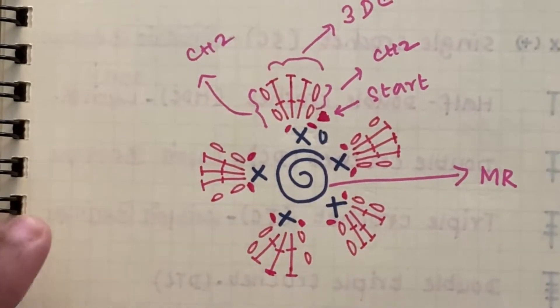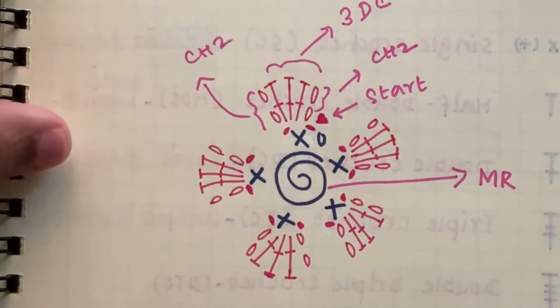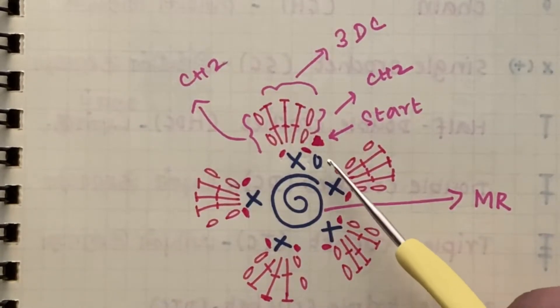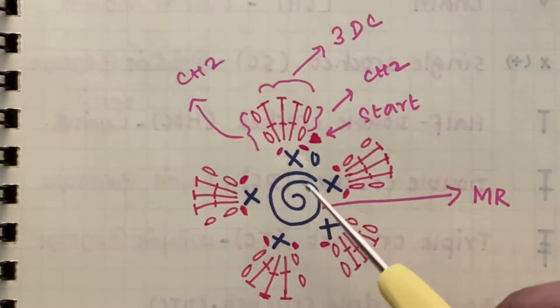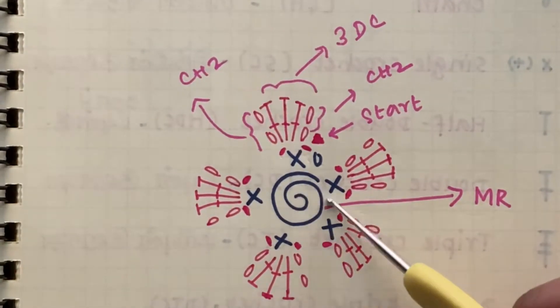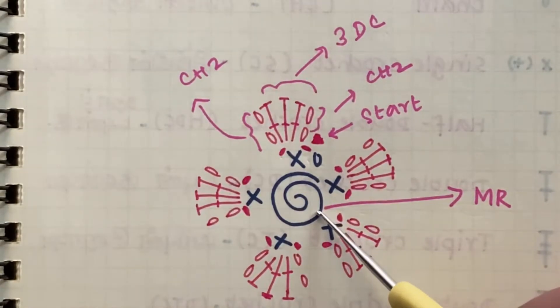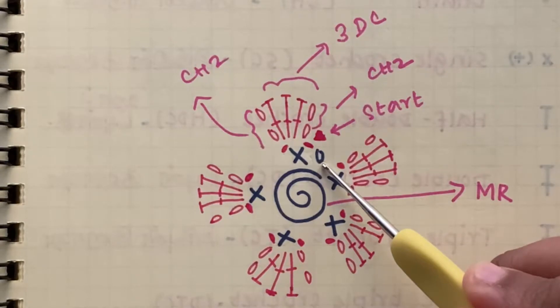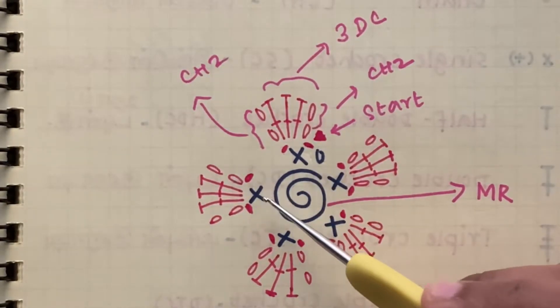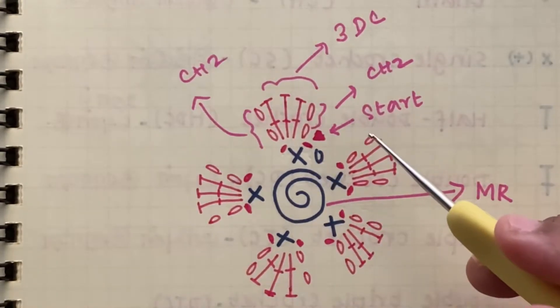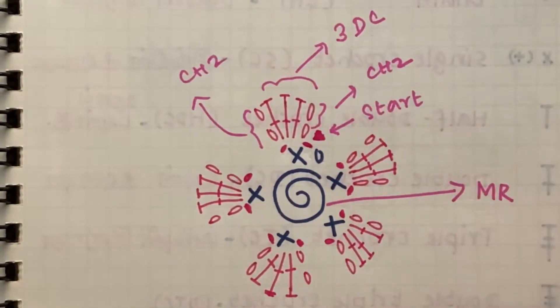So let's start reading this simple crochet flower pattern. The start of the pattern is mentioned here - actually it should be here. This is my handwritten pattern so this has a magic ring, the spiral represents a magic ring, and then we are making a chain, then five single crochets. So the X marks represent a single crochet as we have seen earlier here.